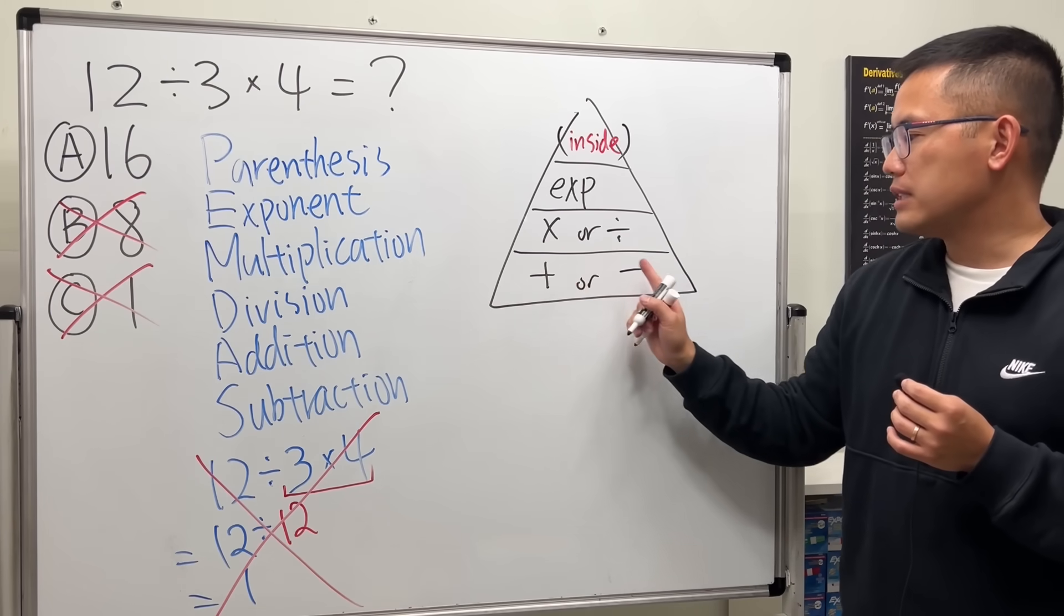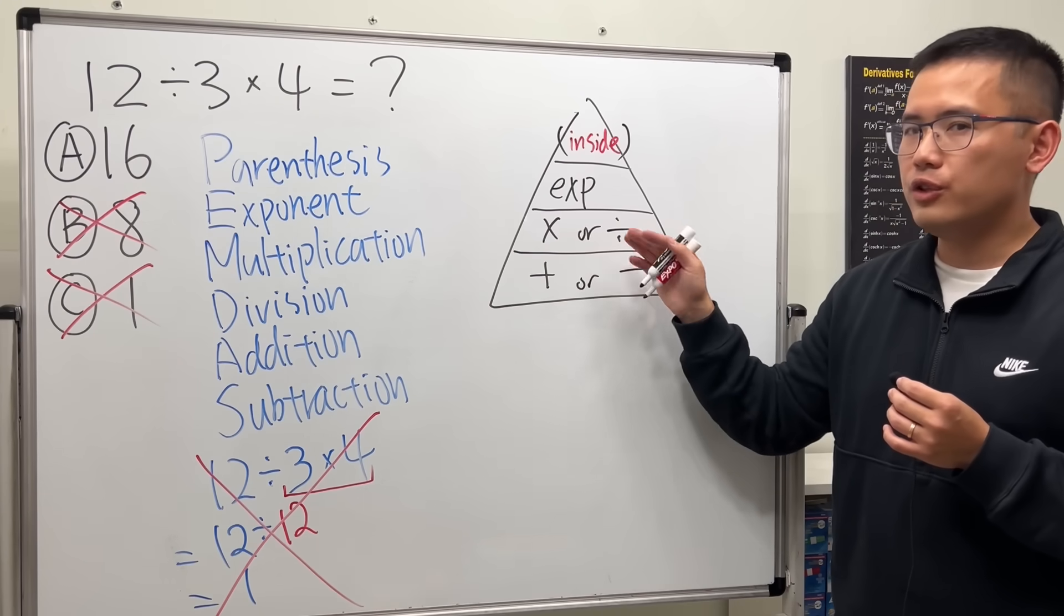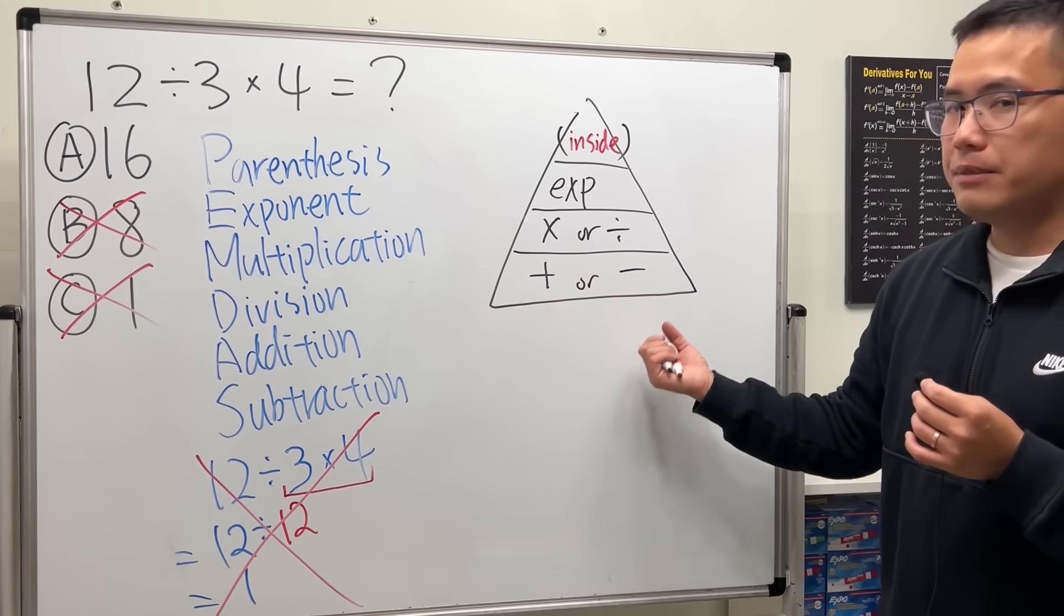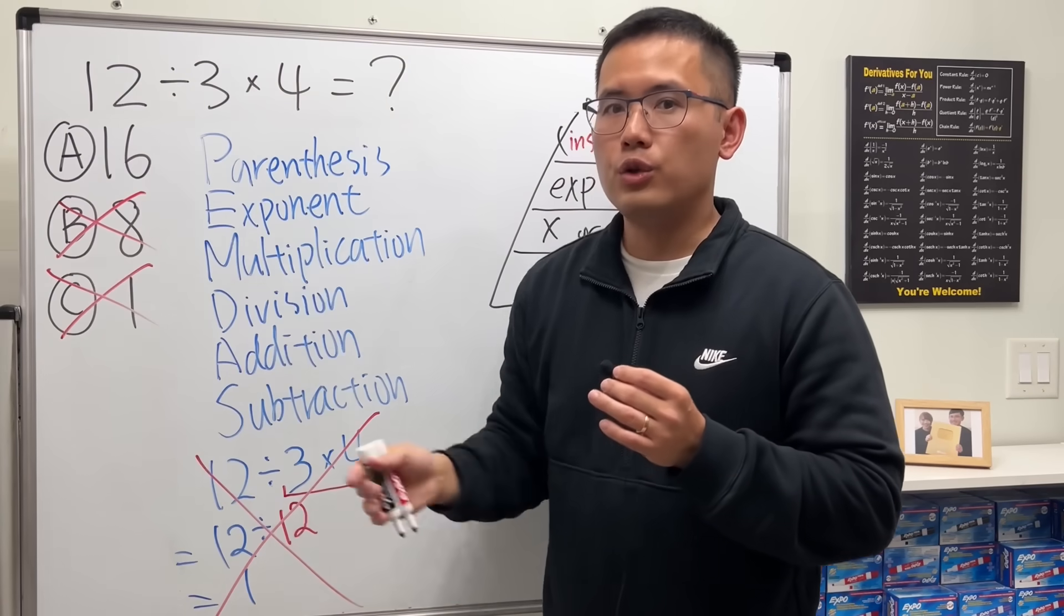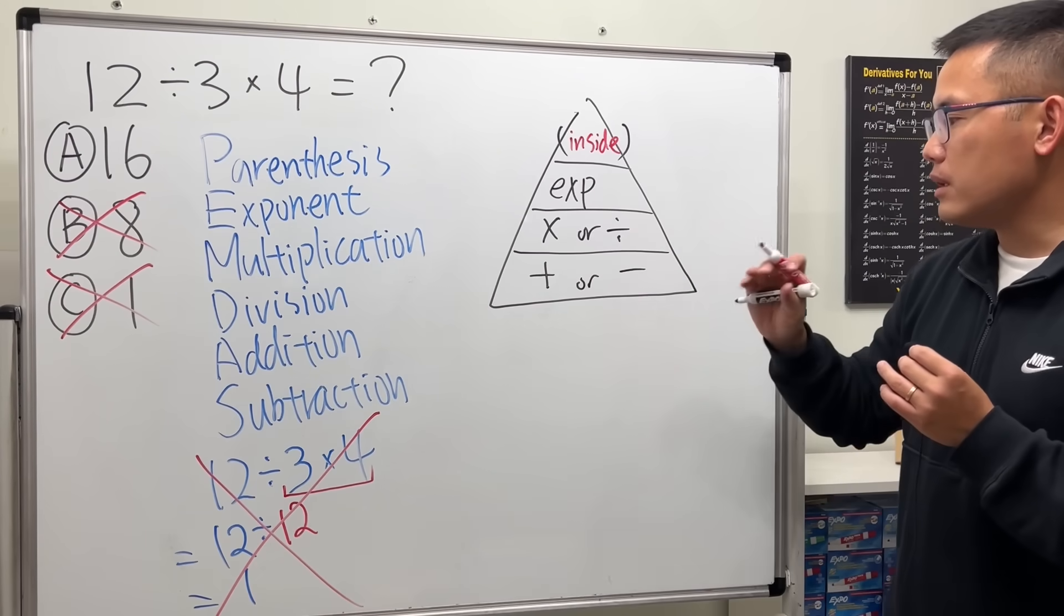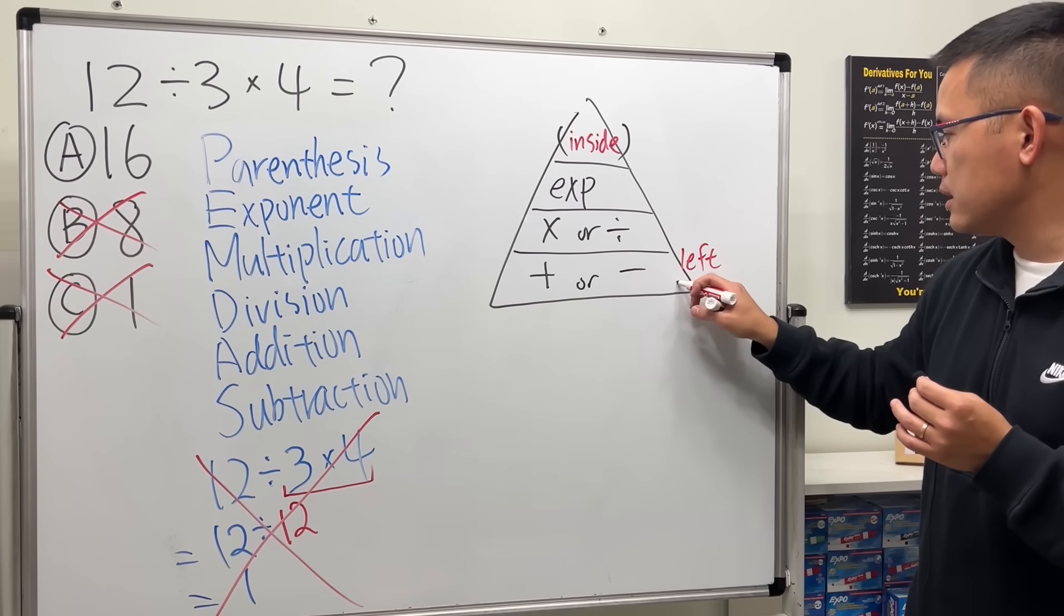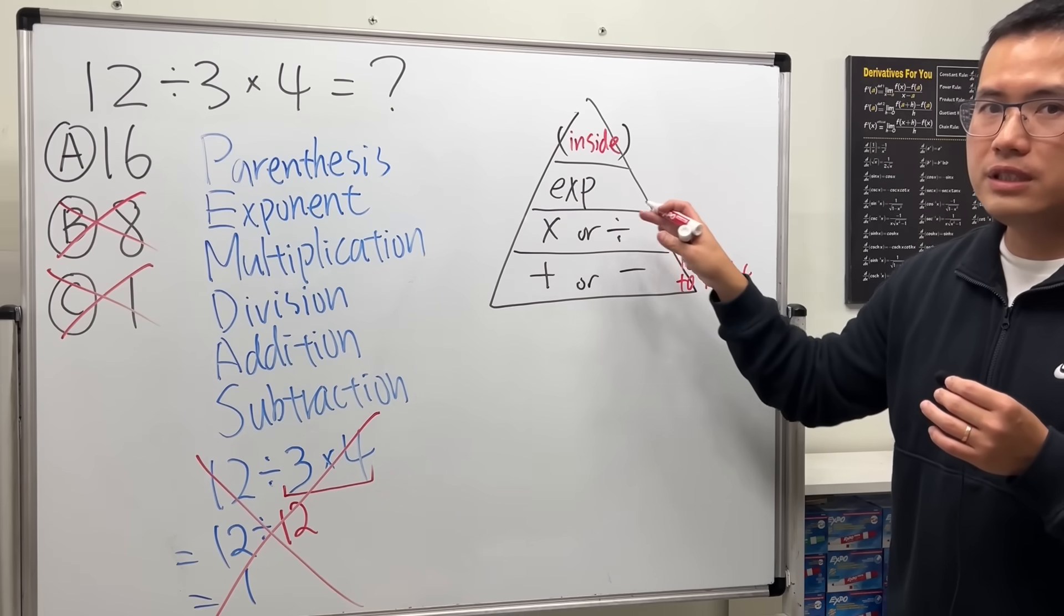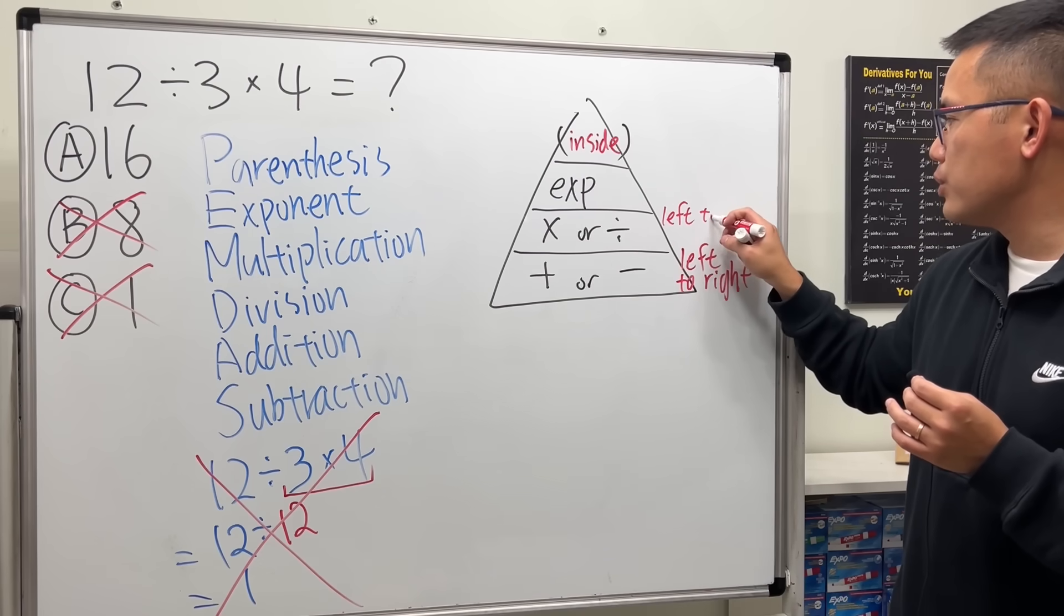What do I mean by addition subtraction? They are on the same level. Likewise, multiplication or division on the same level here. If they are on the same level, when you see them in an expression like this, you just go from left to right. Because they are on the same level, so let me just make a note: left to right. Similarly, if you see the operations on the same level, you also go from left to right.